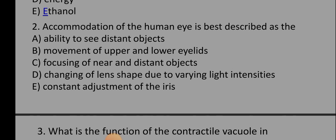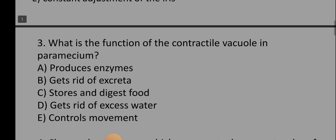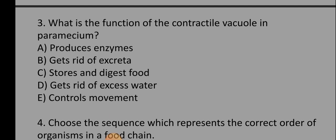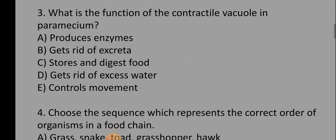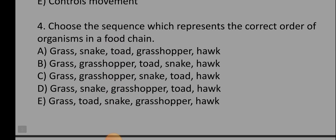Number three: What is the function of the contractile vacuole in paramecium? The options are: A) produces energy, B) gets rid of excreta, C) stores and digests food, D) gets rid of excess water, E) controls movement. So the correct option is D, which is gets rid of excess water. That is the correct option.